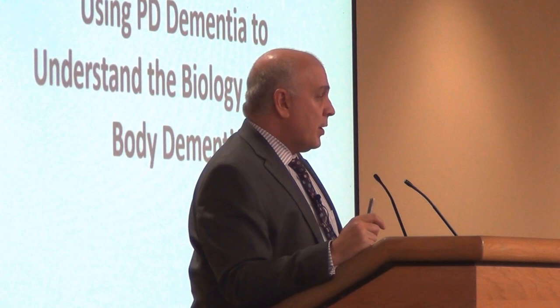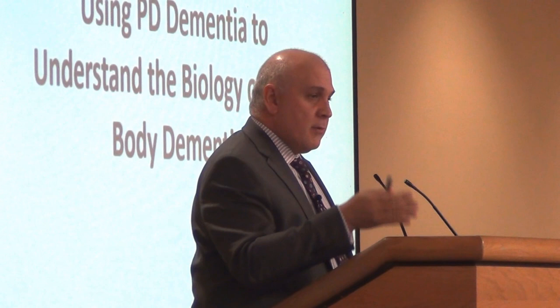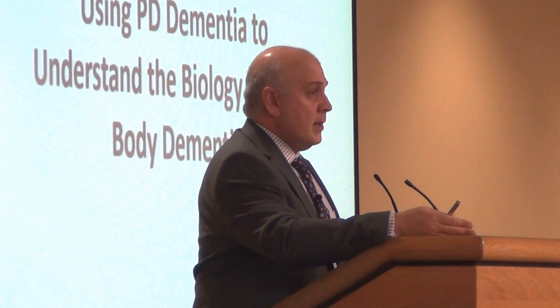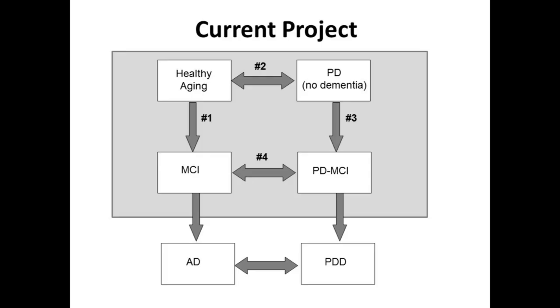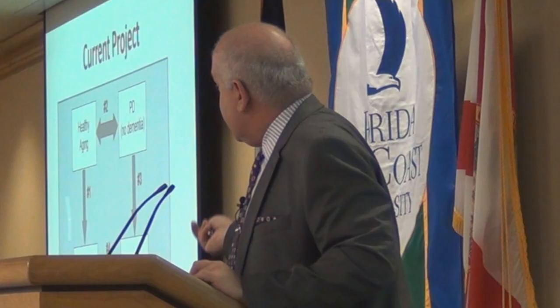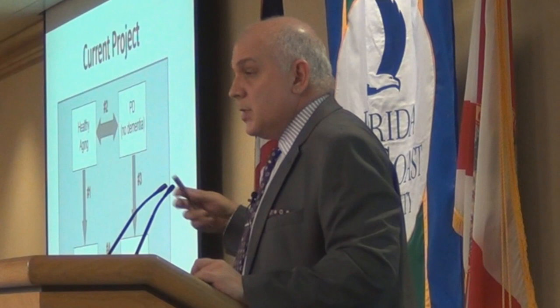Now I want to show you some of the projects we're working on. We're using Parkinson's dementia as a model because it's more easy to define — you have to have Parkinson's disease first and then later develop a memory problem. This is a project funded by the Michael J. Fox Foundation. We have groups ranging from healthy aging to Parkinson's disease without dementia, Parkinson's disease with mild cognitive impairment, and mild cognitive impairment thought to be due to Alzheimer's disease, so we can study within and between groups to understand the differences between the diseases.